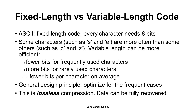In English, some characters such as S and E are used often. Some other characters, such as X and Z, are used rarely. If we use variable length coding, the data can be expressed more efficiently. Efficiency is measured by the average number of bits per character. If a character is used frequently, it uses fewer bits. If a character is used rarely, it uses more bits. On average, we need to use fewer bits for the data.